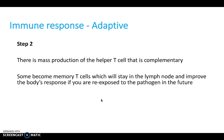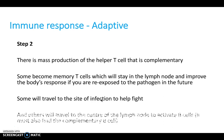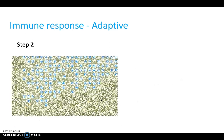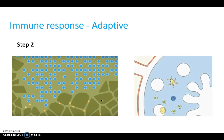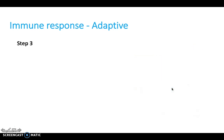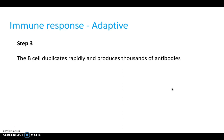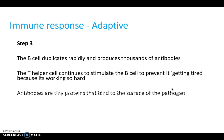Step two: there's a mass production of this complementary helper T cell. Some become memory T cells, staying in the lymph node to improve the body's future response. Some travel to the site of infection to help fight it. The B cells duplicate rapidly and produce thousands of antibodies. The T helper cell continues to stimulate the B cell to prevent it getting tired from working so hard.